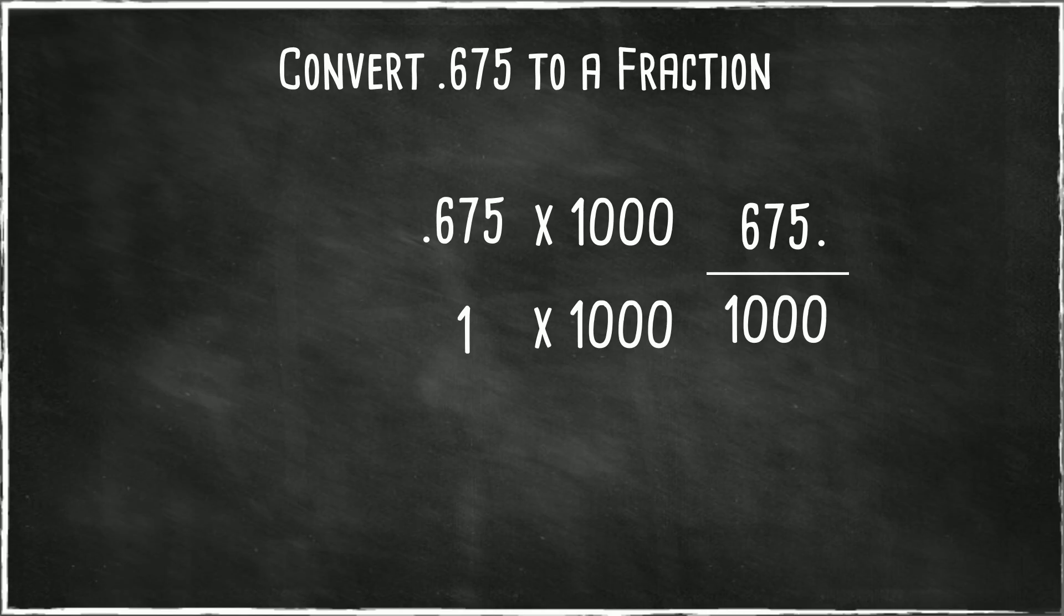Now all we need to do is reduce this fraction. I can divide both 675 and 1,000 by 25. 675 divided by 25 is 27, and 1,000 divided by 25 is 40.